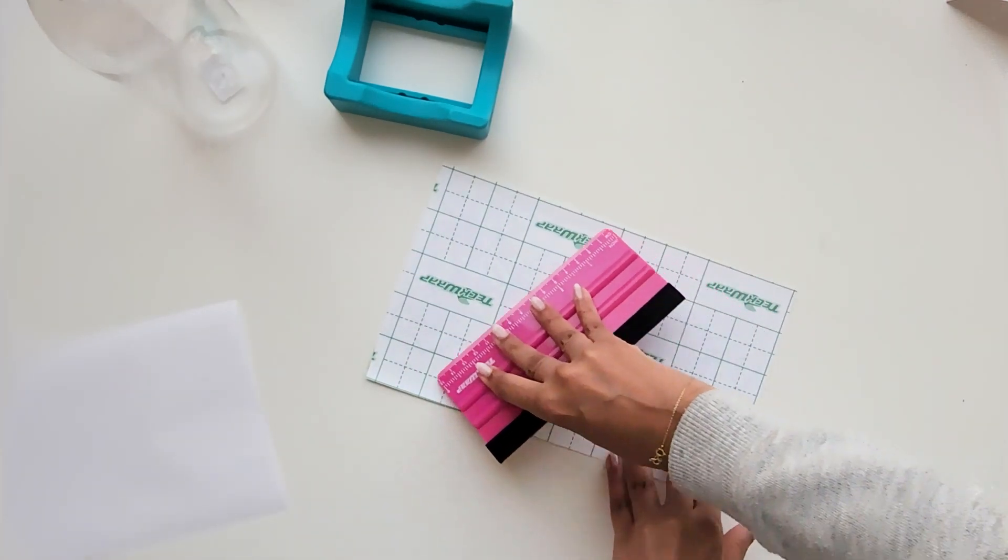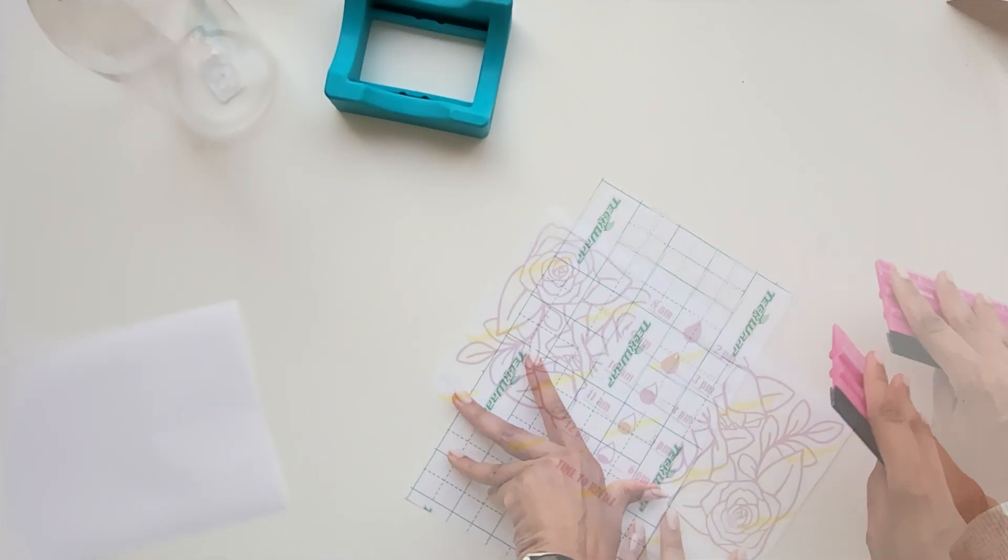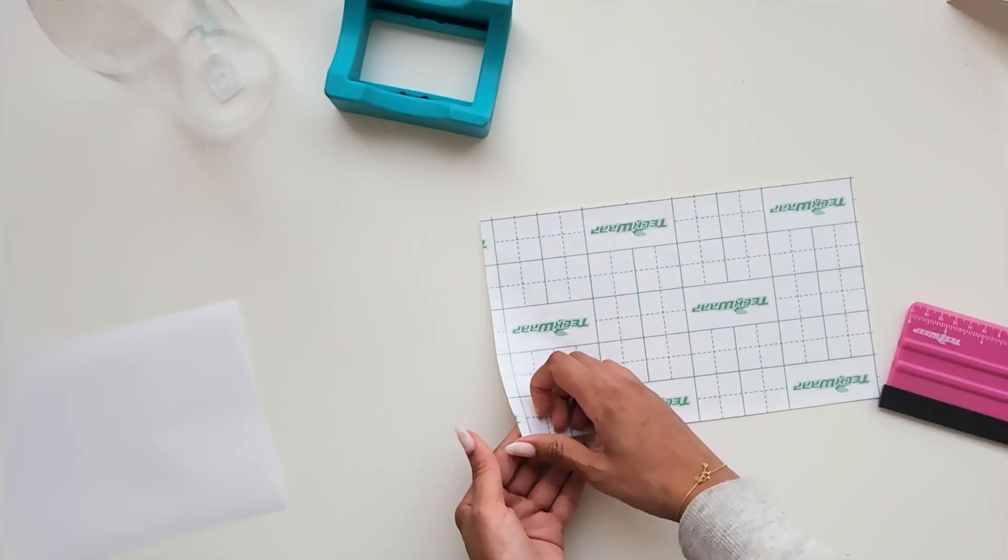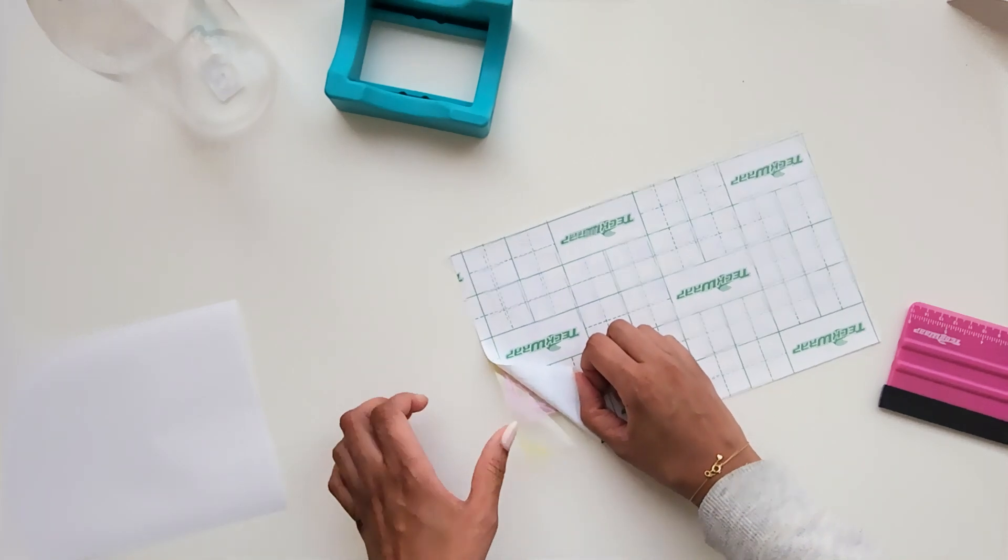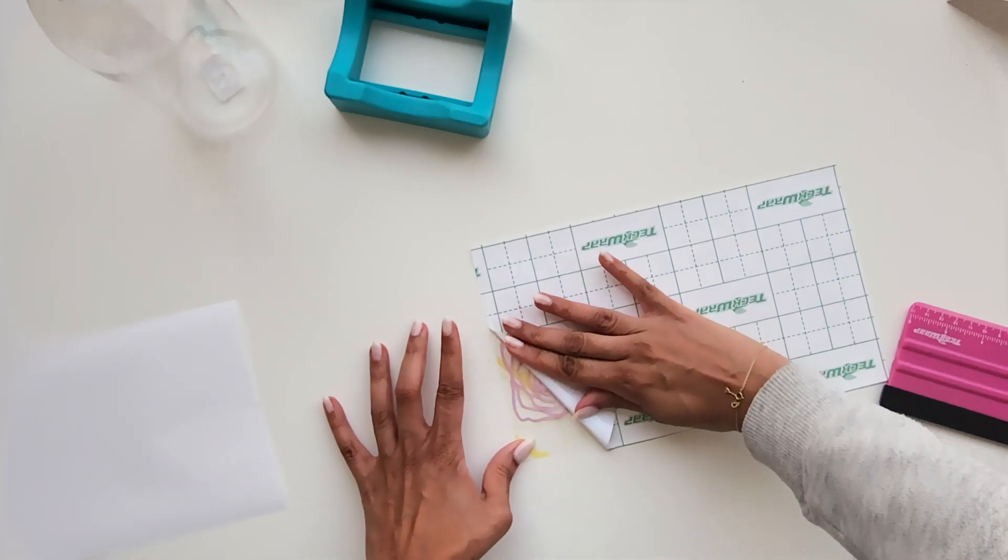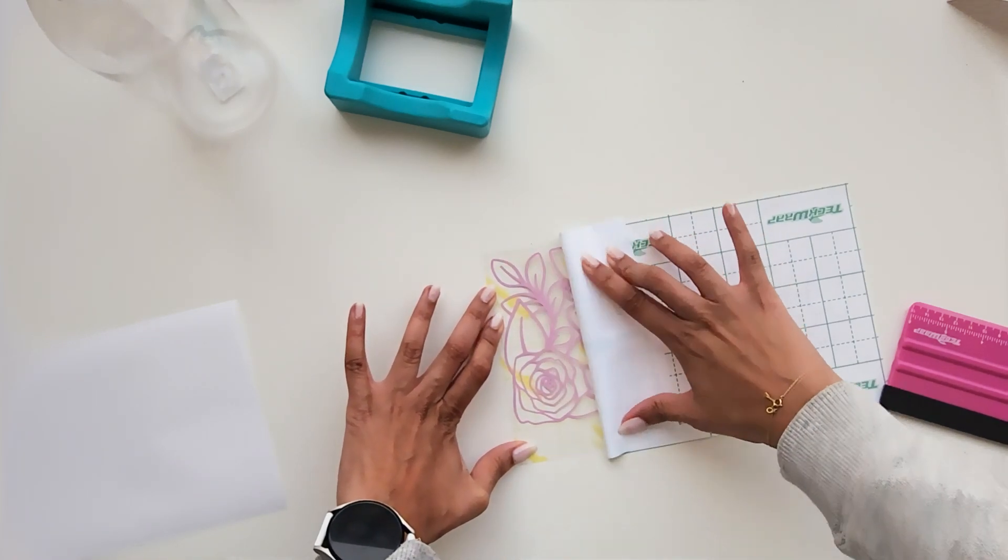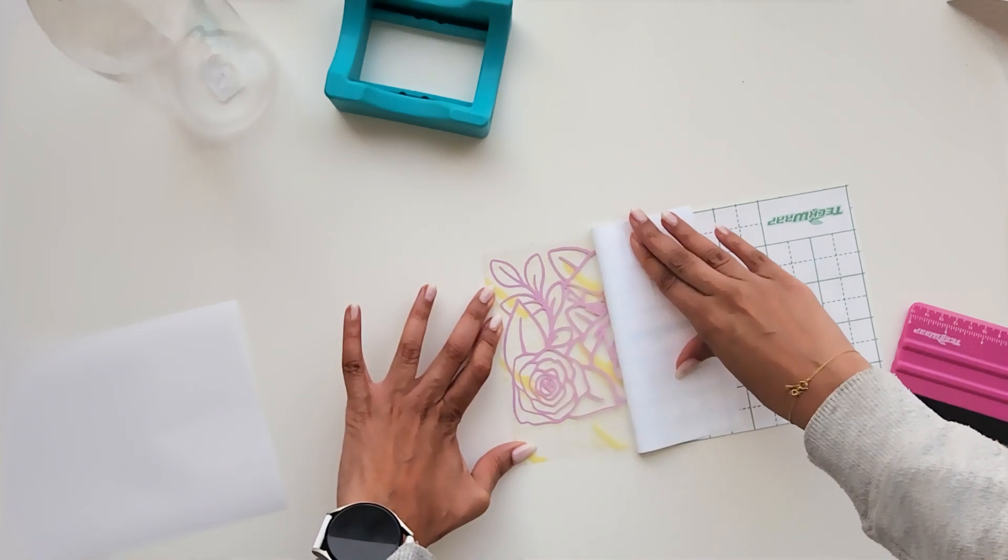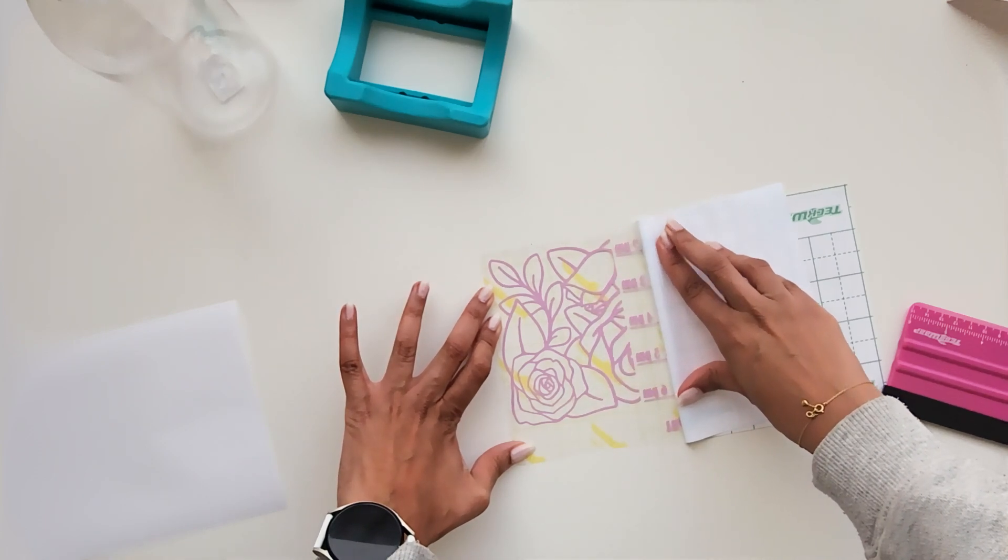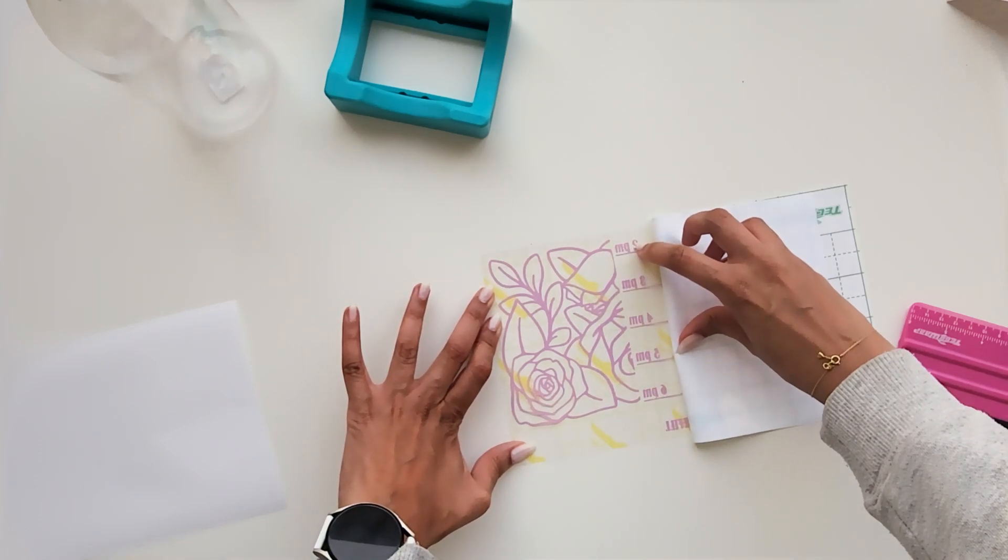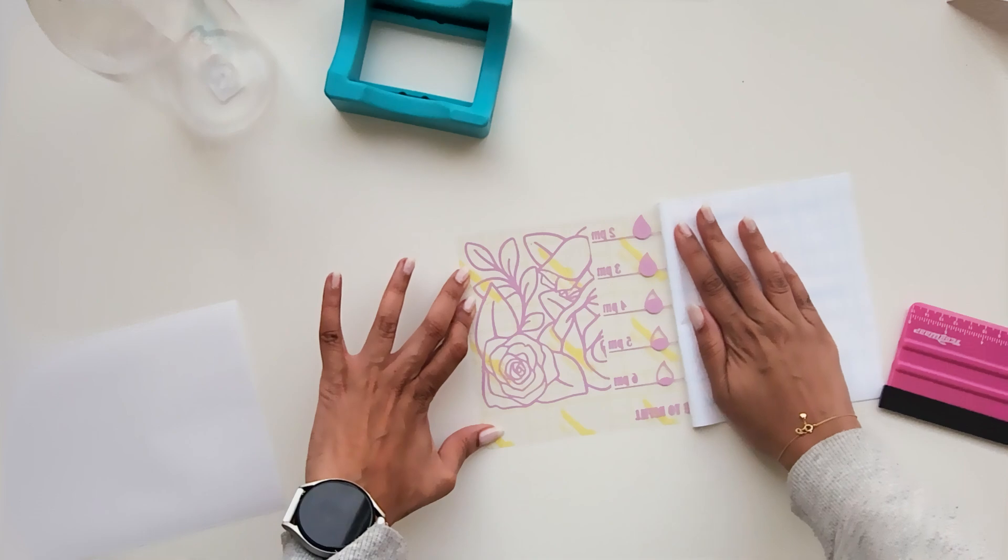Give it a scrape. Turn it around, do the same, and peel back. Do it slowly so you don't lose any tiny bits.